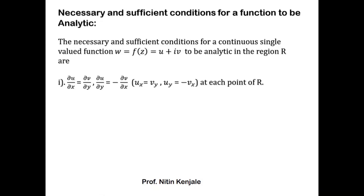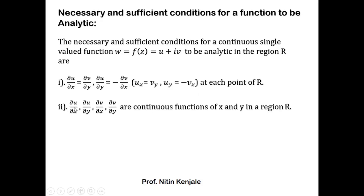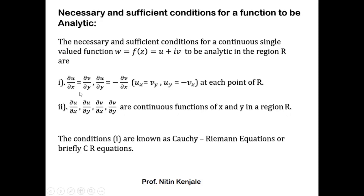The first condition is: the partial derivative of u with respect to x equals the partial derivative of v with respect to y, and the partial derivative of u with respect to y equals minus the partial derivative of v with respect to x. Or simply, ux equals vy and uy equals minus vx. This should hold at each point of the region R. The second condition is that these partial derivatives of u and v with respect to x and y should be continuous in the region R. The conditions in number 1 are also called Cauchy-Riemann equations, or CR equations.